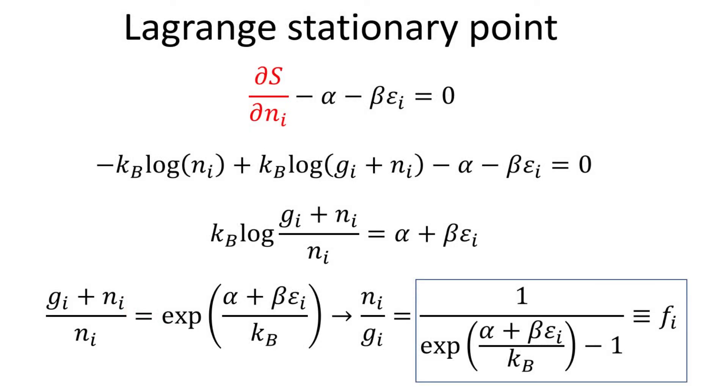Returning back to the Lagrange stationary point, we can now substitute the entropy stationary point into the expression. The terms involving logarithms can be combined, and with some algebra, we can arrive at an expression for the electron occupation for energy level i, which is the ratio between the number of electrons n_i to the total available states g_i at that energy level.